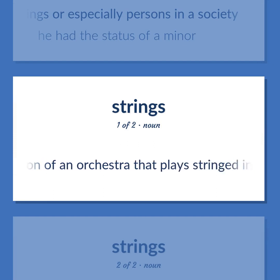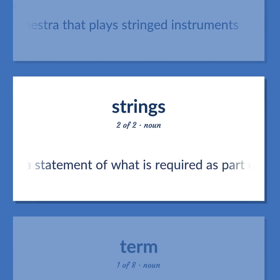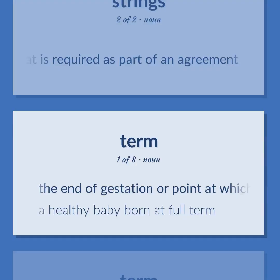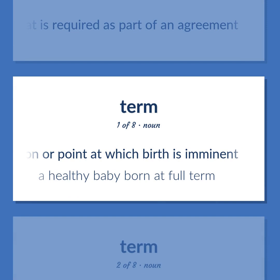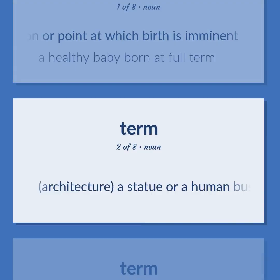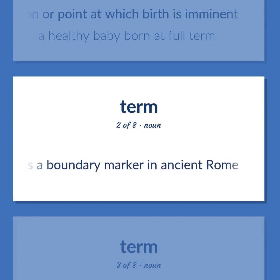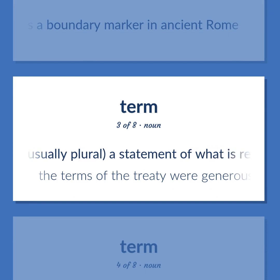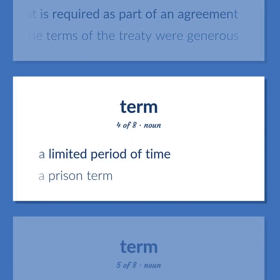Term: the section of an orchestra that plays stringed instruments. Usually plural: a statement of what is required as part of an agreement. The end of gestation or point at which birth is imminent — 'A healthy baby born at full term.' Architecture: a statue or a human bust or an animal carved out of the top of a square pillar, originally used as a boundary marker in ancient Rome. Usually plural: a statement of what is required as part of an agreement — 'The terms of the treaty were generous.' A limited period of time — 'A prison term.'